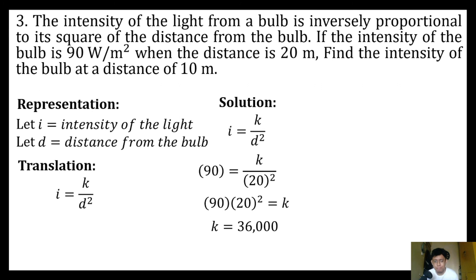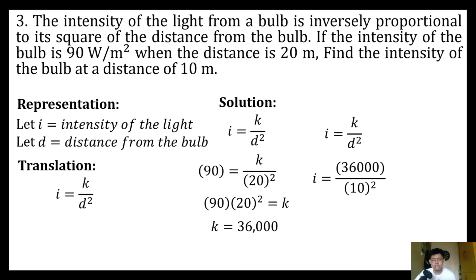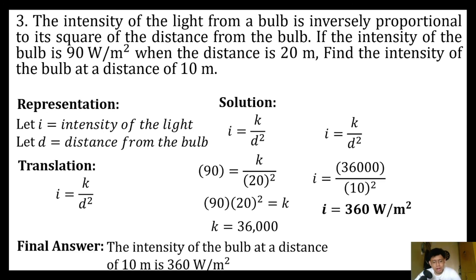Now that we know our constant of variation, we can solve for the intensity of the bulb at a distance of 10 meters using the same equation, substituting the constant of variation and the distance of 10 meters. We have 36,000 divided by 10 squared, and simplifying, i is equal to 360 watts per square meter. Therefore, the intensity of the bulb at a distance of 10 meters is 360 watts per square meter.